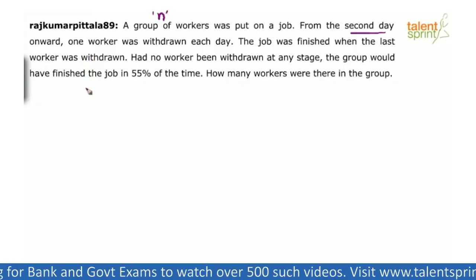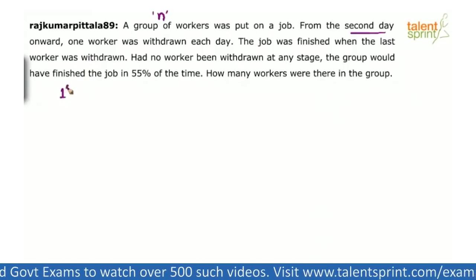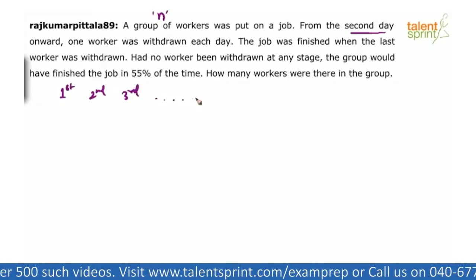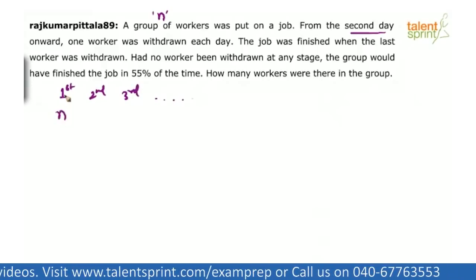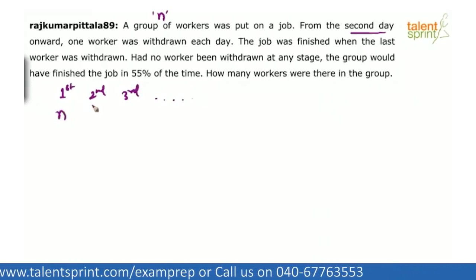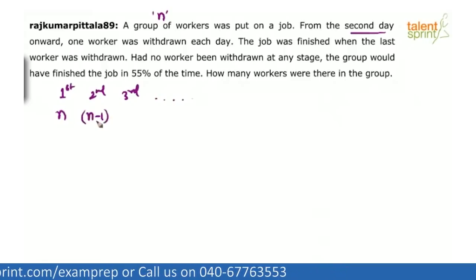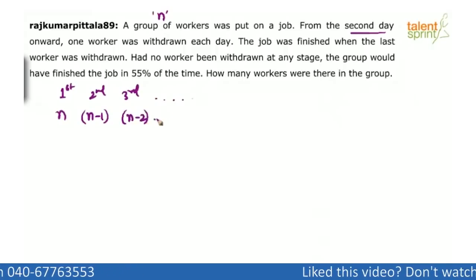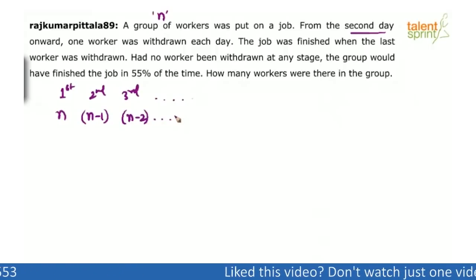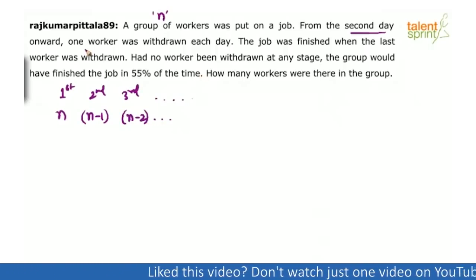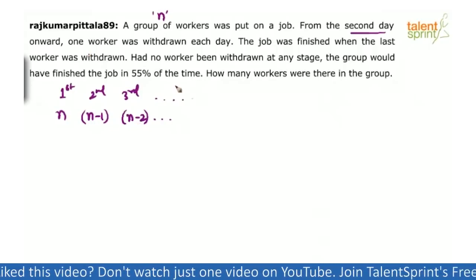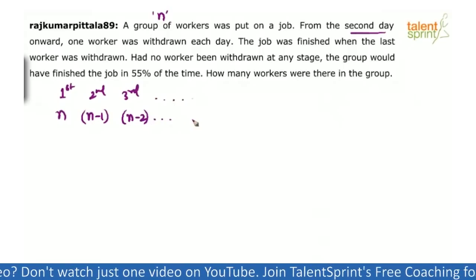So what happens? On the first day, n workers work. On the second day, n minus 1 will only work because one worker was withdrawn. On the third day, n minus 2 will work because one more was withdrawn. On the fourth day, n minus 3 workers, and so on.